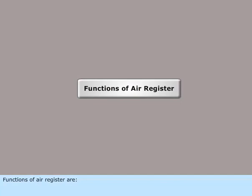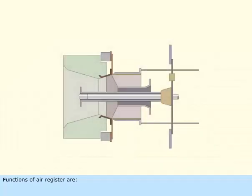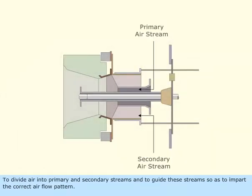Functions of air register are to divide air into primary and secondary streams and to guide these streams so as to impart the correct airflow pattern.